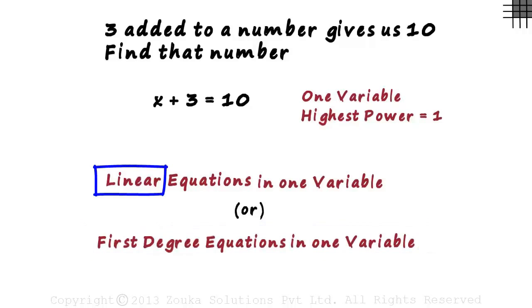They are called linear or first degree because the highest degree of the variable is 1. We will have a deeper understanding of why such equations are called linear in the coming videos.